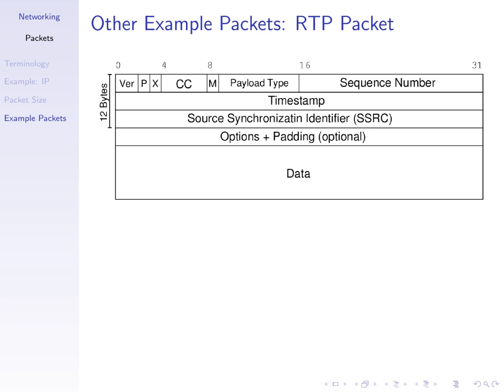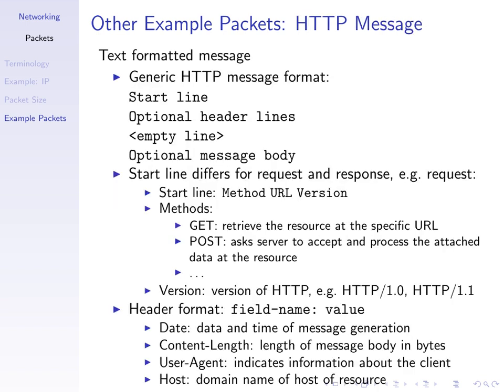An RTP packet, used for video and audio transmission, has a 12-byte header normally, some options, and then data. Then some protocols don't look at the header from a binary perspective, but treat it as just a text-formatted message. So in HTTP, the typical messages are requests and responses, and they are just text content. The format contains a line of text indicating the type of message, some optional header lines, an empty blank line, and then optional message body.